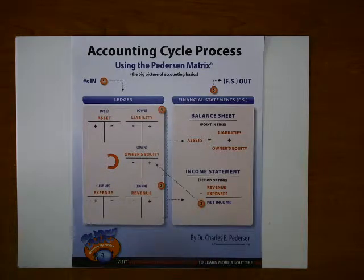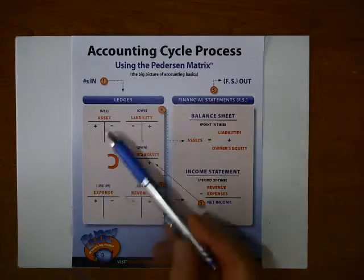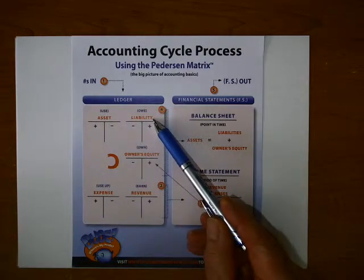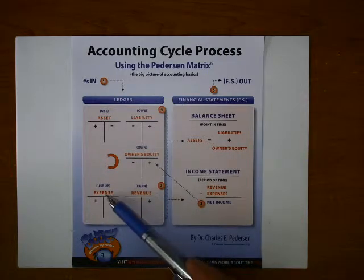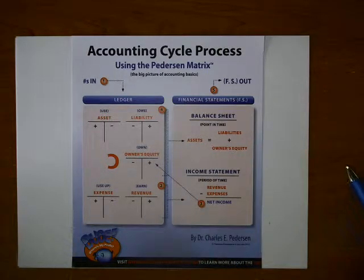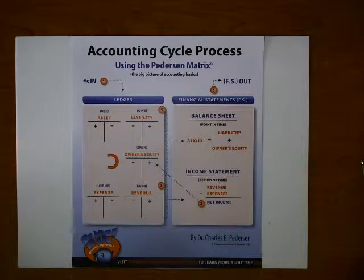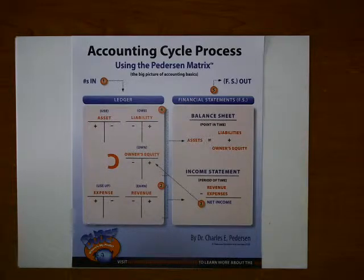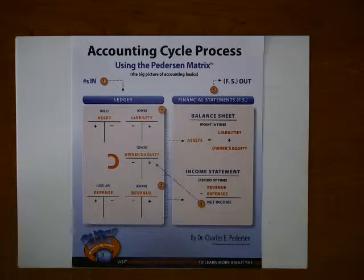We have to use accounting terms to define what each one of these T-accounts is: asset, liability, owner's equity, revenue, and expense. Every single number in accounting will go into one or more of these five general categories of accounts, no exception. If you were to turn to a typical accounting text and look up the word asset, it would say something like 'an economic resource designed to provide future value.' Unfortunately, I think that's where confusion in accounting begins, so I've endeavored to reduce these to one and two word definitions that we can visualize.